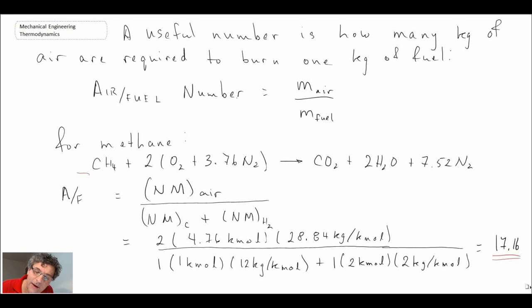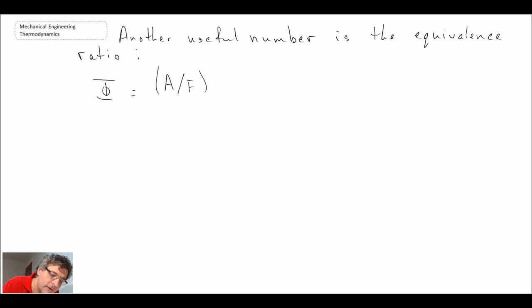The last thing I want to take a look at here is another useful number called the equivalence ratio. The equivalence ratio is capital phi, and for this we take the air-to-fuel ratio for a stoichiometric balance divided by the actual air-to-fuel ratio.